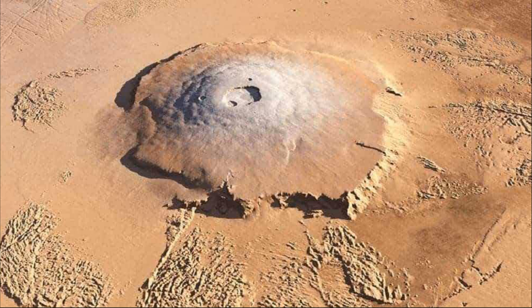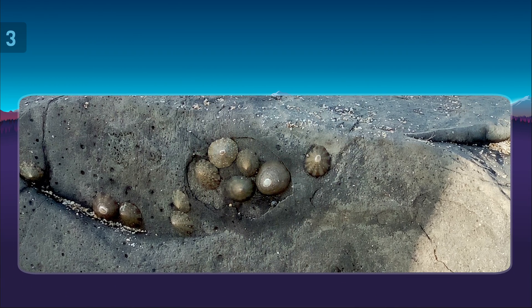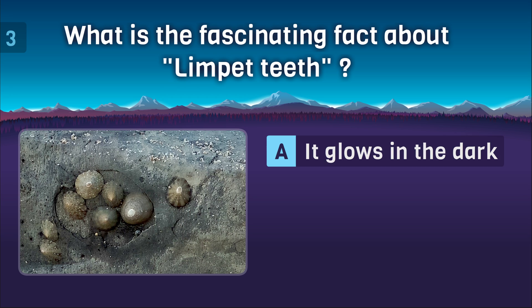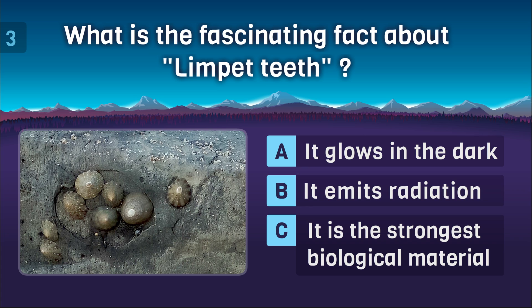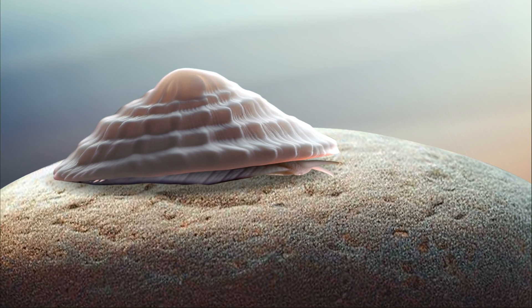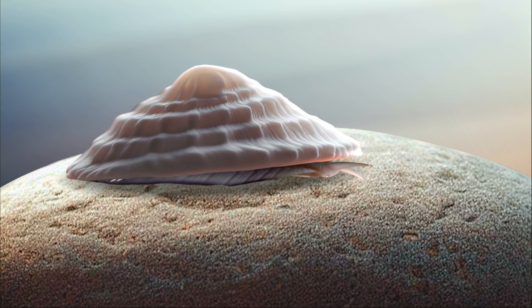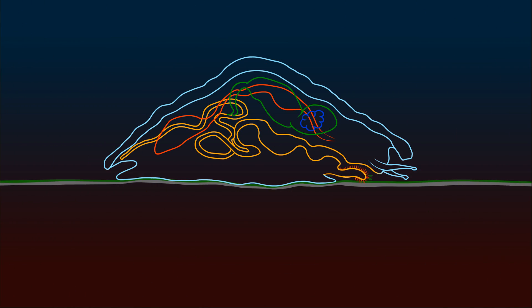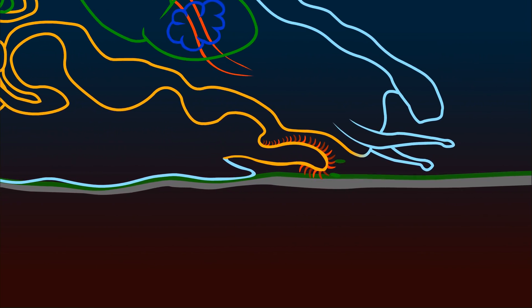Moving on to the next question. What is the fascinating fact about limpet teeth? It glows in the dark, it emits radiation, or it is the strongest biological material? And this is the right answer. Limpets are a type of aquatic snail with a cone-shaped shell. It keeps itself clinging to the rock surface with a strong muscular foot.